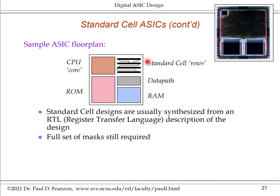An application-specific integrated circuit consists of rows of standard cells, some memories, possibly a CPU core supplied by a third party, and sometimes a custom data path such as a specialized multiplier done in full custom — though this is increasingly rare. The basic methodology is: write RTL, synthesize to a set of gates, place and route across the chip surface, and create masks for fabrication. A full set of masks is still required.